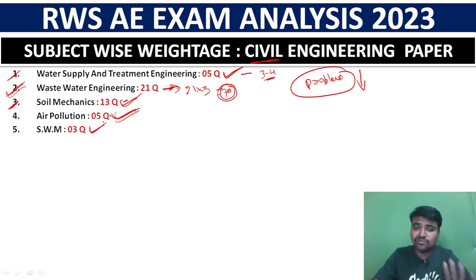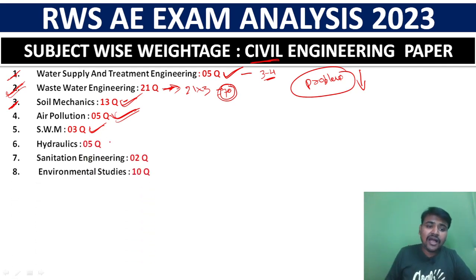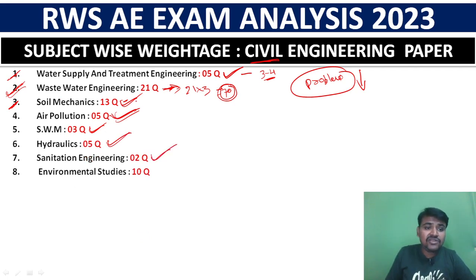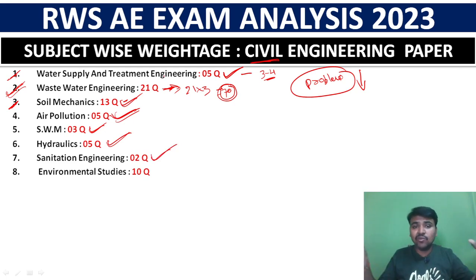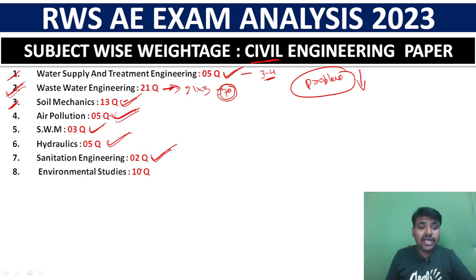These questions tend to be repeated. Hydraulics has 5 questions. Sanitation engineering has 2 questions. Sanitation engineering, wastewater engineering, and treatment engineering are all closely related. Sanitation engineering contributes 1 question, and environmental studies also has 1 question.